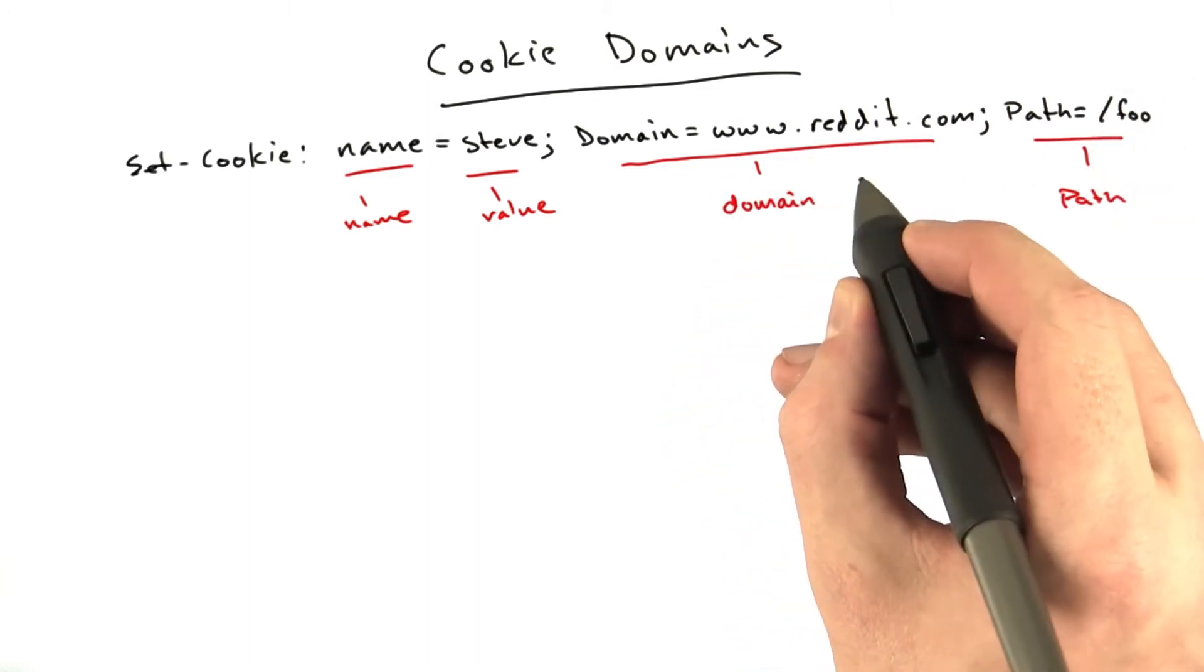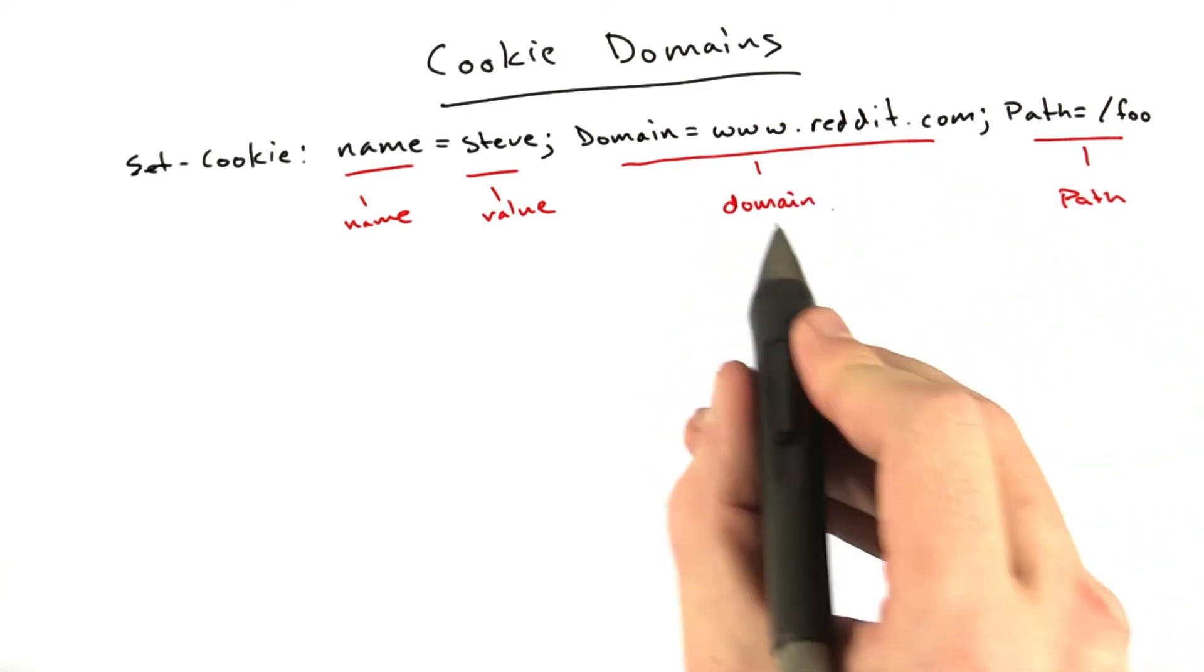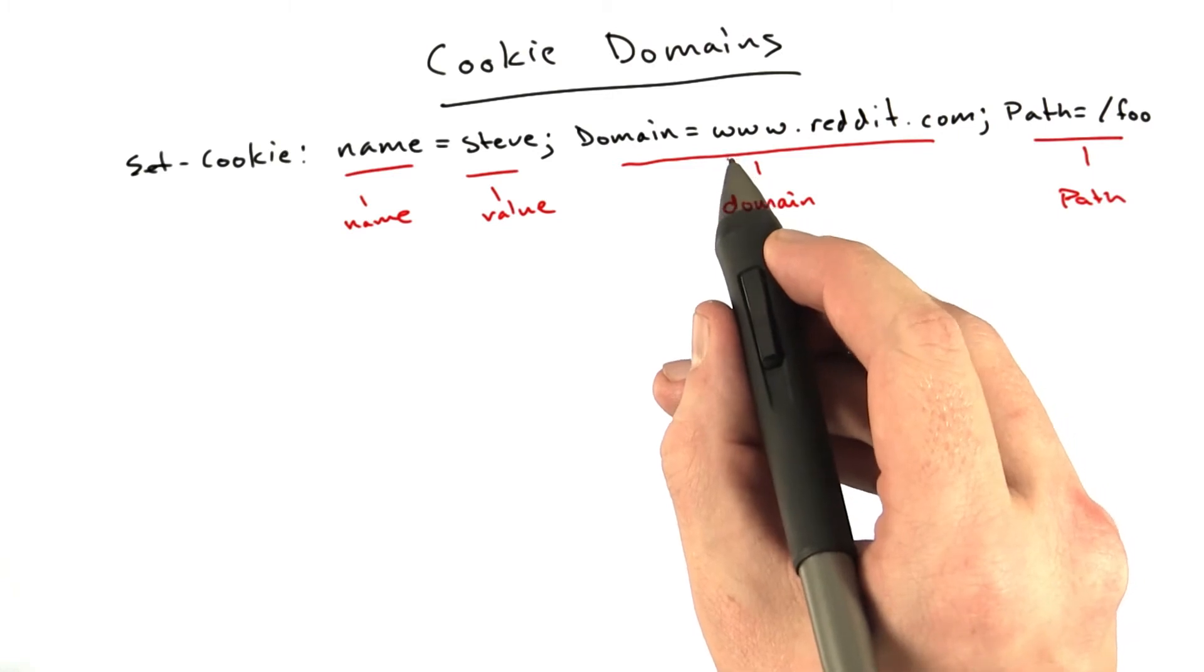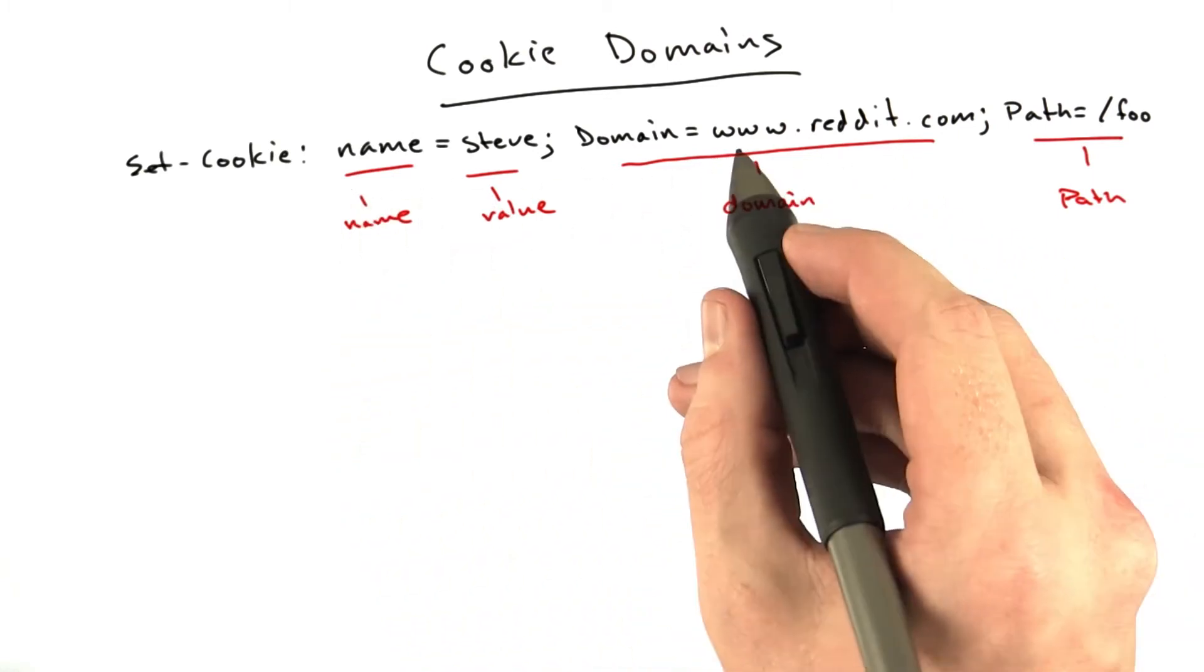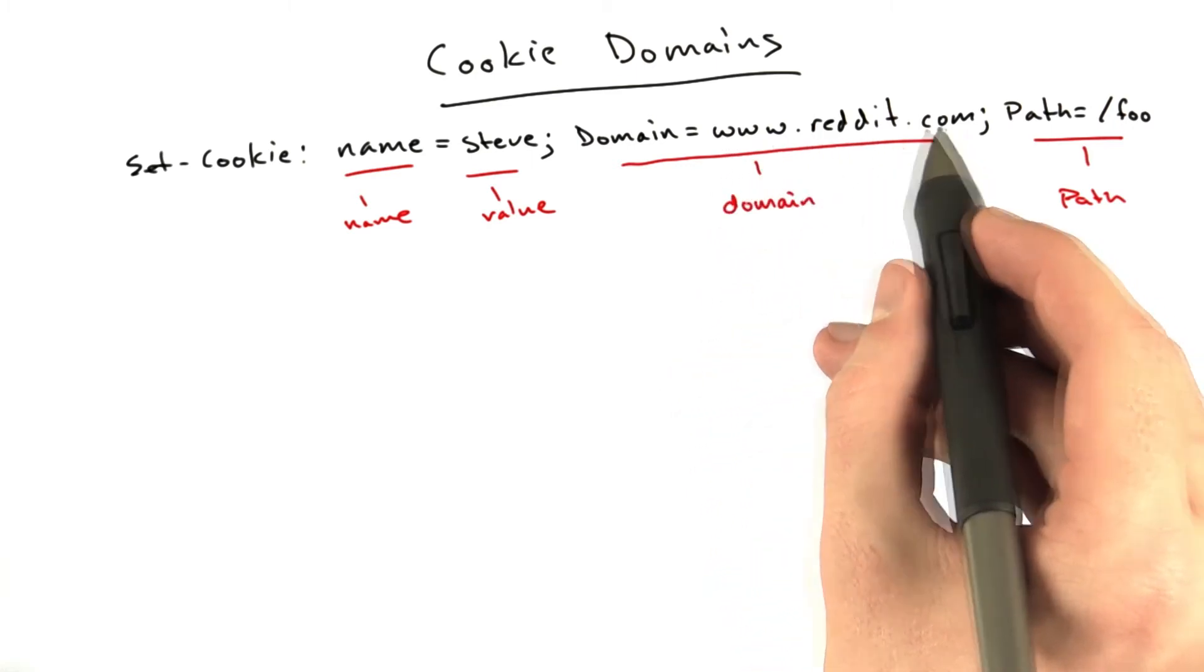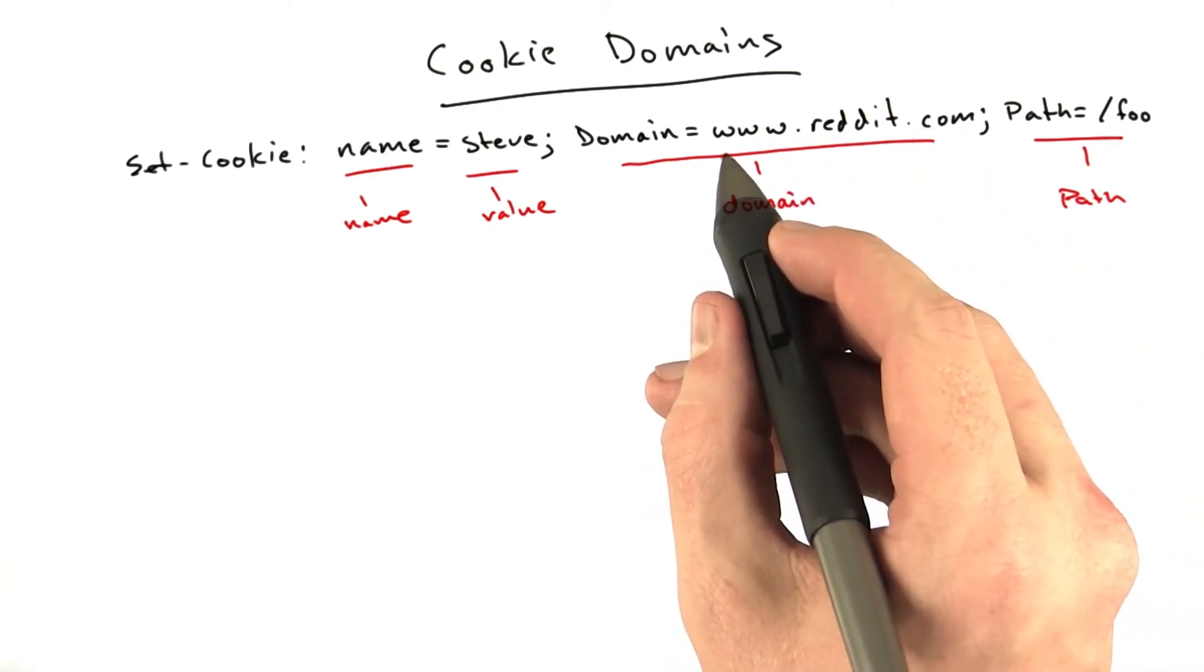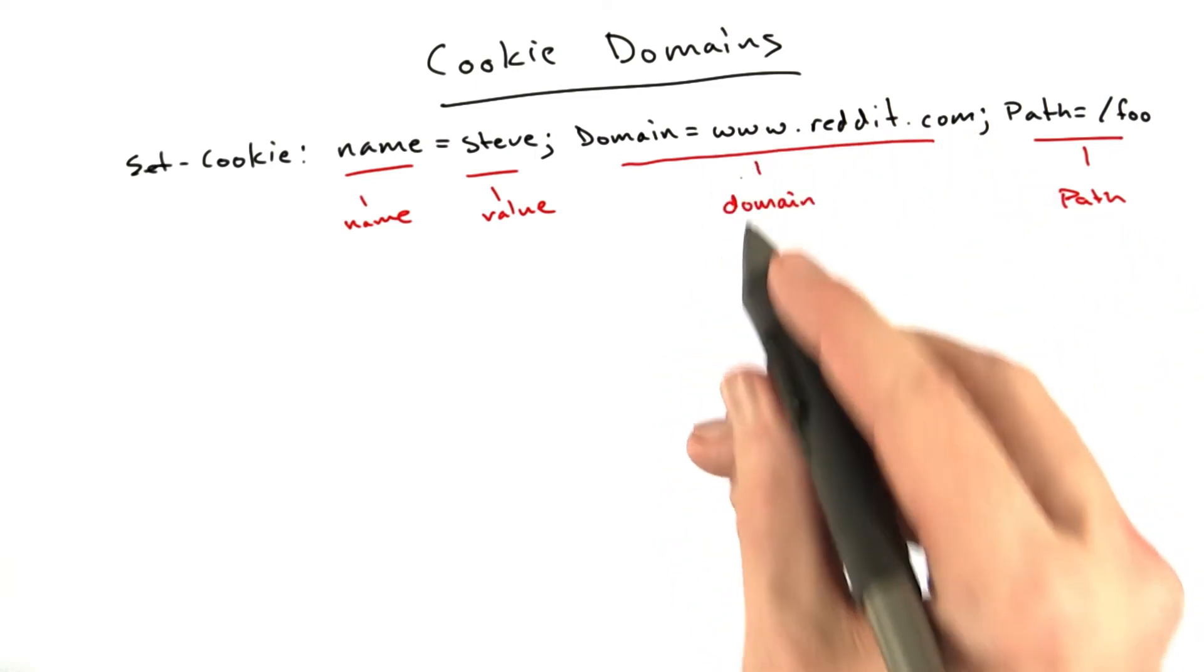The domain is much more interesting and much more complex. Let's talk about this a little bit. This means that basically this cookie will not get sent by the browser to the server unless the server's domain is www.reddit.com, or basically ends with www.reddit.com.